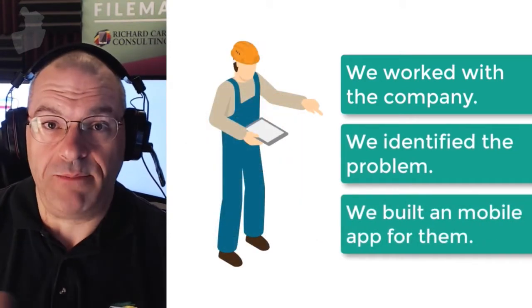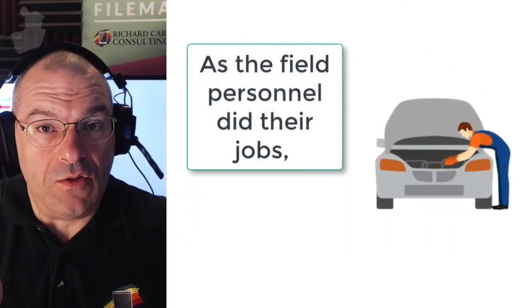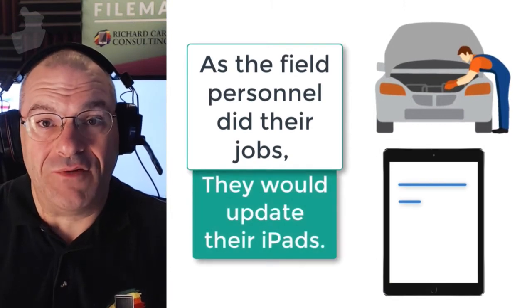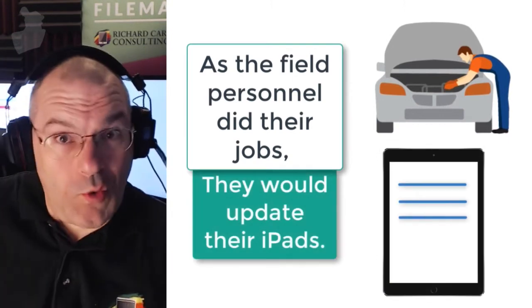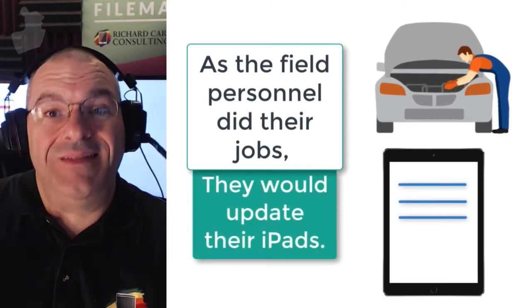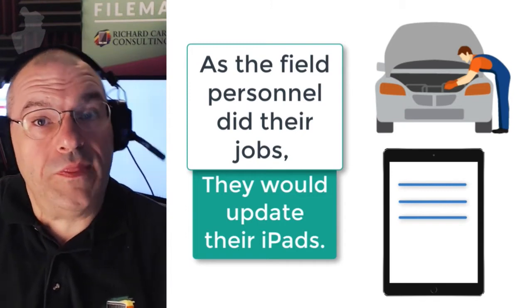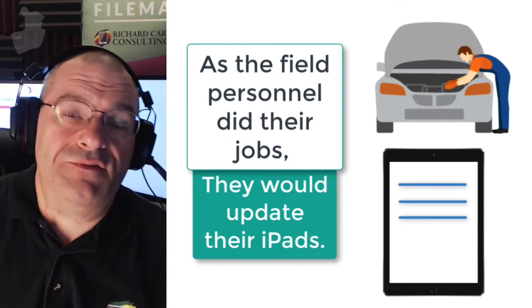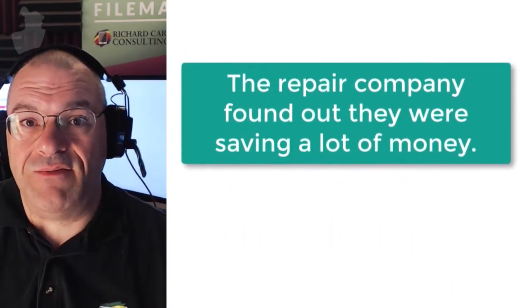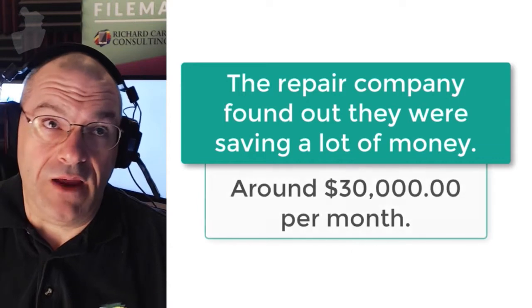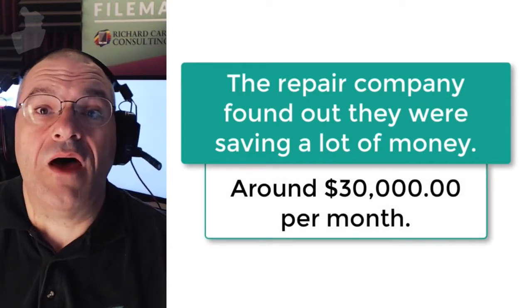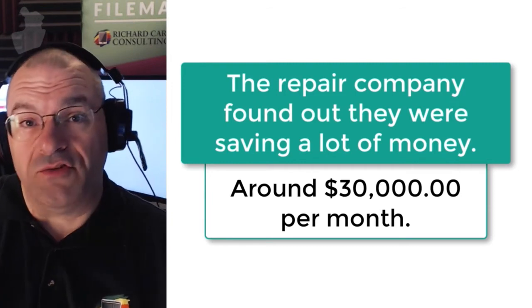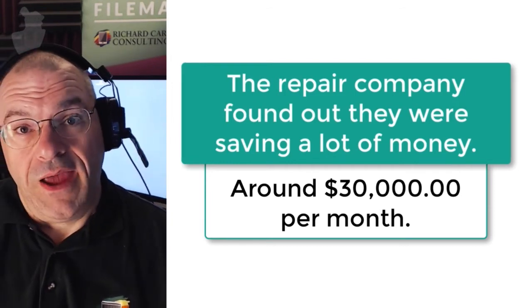In this case, it was an iPad. As these field personnel did their job, they would interact with the iPad and enter information along the way during the course of their work. So when it got to the end of the day at three or four o'clock — when they would normally knock off — they actually could do another hour of work. The company figured out they were saving a ton of money, something in the neighborhood of $30,000 a month. So this company actually ended up doing $30,000 more work per month.